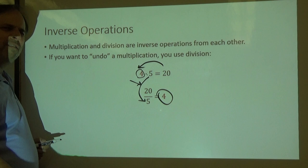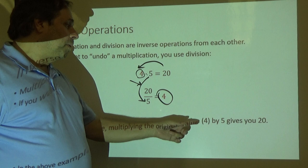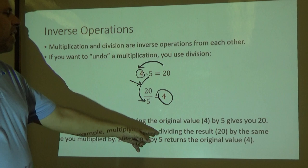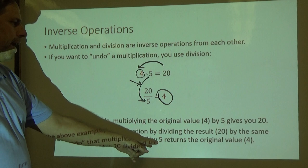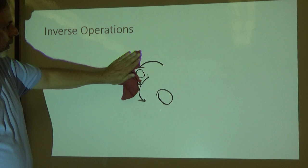Inverse, by the way, just kind of means opposite. So they're opposite of each other in a way. So multiplying by four, or multiplying four by five gives you 20. But then undoing that, you divide that 20 by the same value you multiplied it by, five, and you get the original value of four. Hope that makes sense. If not, get with me in tutorials.